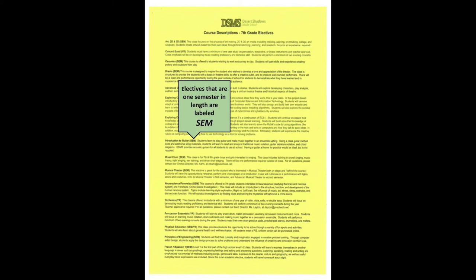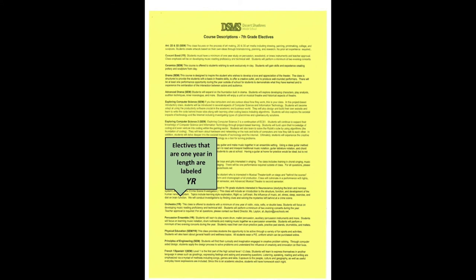At Desert Shadows, we offer electives that are one semester in length — these classes are marked SEM in parentheses behind the course name and last half of the school year. Some of the semester classes offer two levels; in this case, you must take Level 1 before you can take Level 2. Full year electives are classes that you would be in from the time school starts in August all the way through the end of the school year in May. These classes are marked YR for year in parentheses behind the course name.